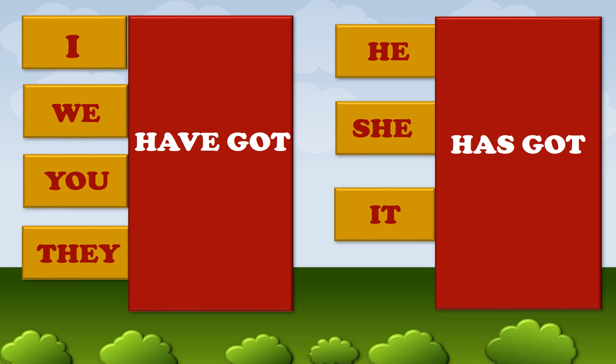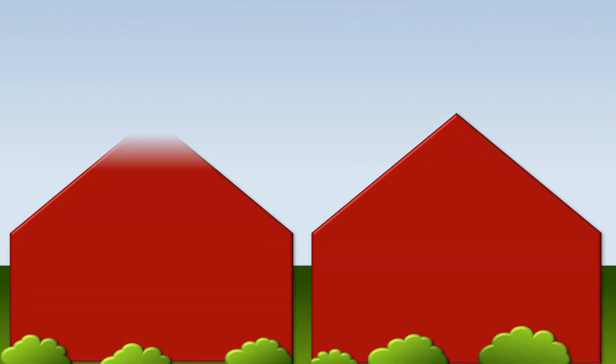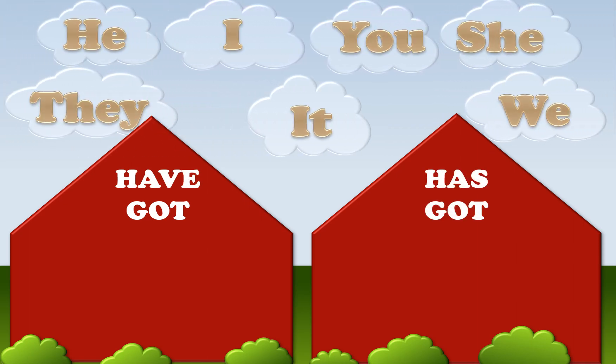Let's have some examples together. With he, I say he has got. With I, I have got. With you, you have got. With she, she has got. With they, they have got. With it, it has got. And with we, we have got.